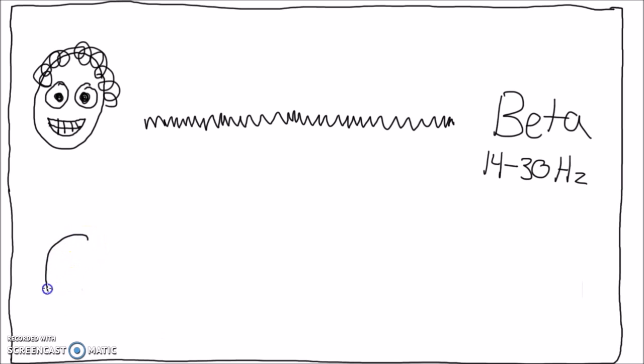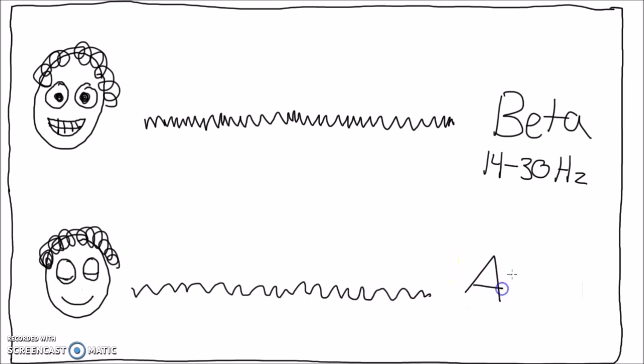Next, Bob lies down to sleep. He closes his eyes and his brain transitions into the alpha wave pattern. No longer processing visual information, the brain slows down, which is reflected by the 9 to 13 Hz alpha waves.